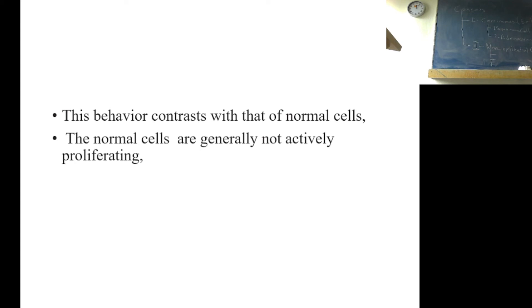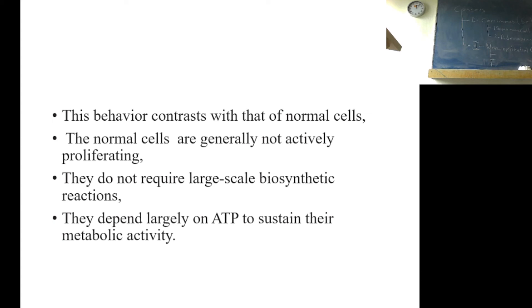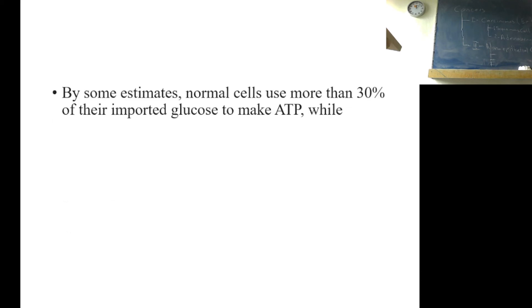The normal cells are generally not actively proliferating. They do not require large-scale biosynthetic reactions. They depend largely on ATP to sustain their metabolic activity. By some estimates, normal cells use more than 30% of their imported glucose to make ATP, while cancer cells use only 1% of their glucose for this purpose.